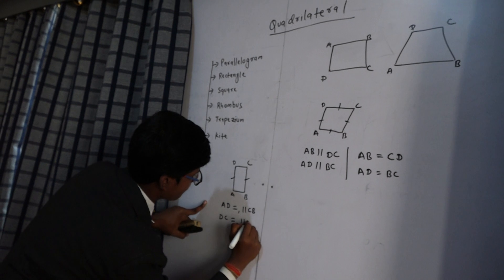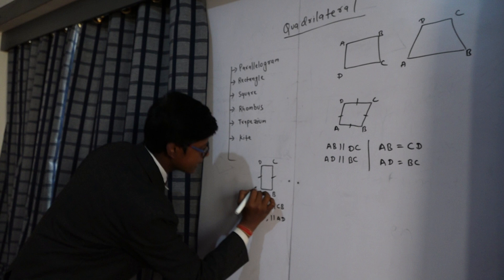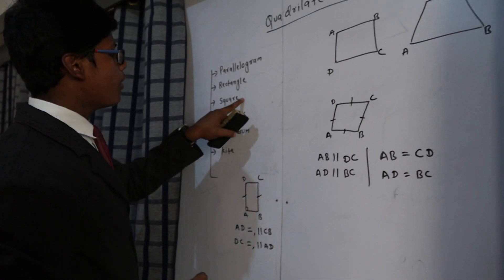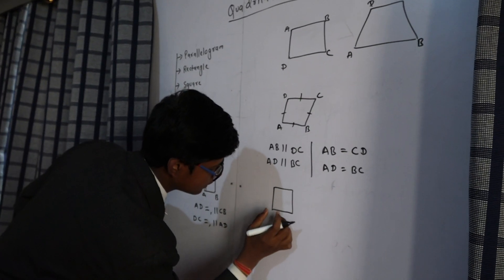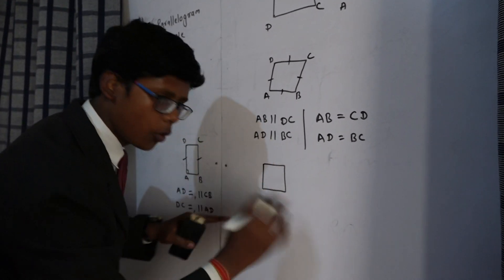Another feature of this quadrilateral is that it forms 90 degrees at the vertices. Now moving to our next quadrilateral, that is a square. The main property of this quadrilateral is that all four sides are equal.